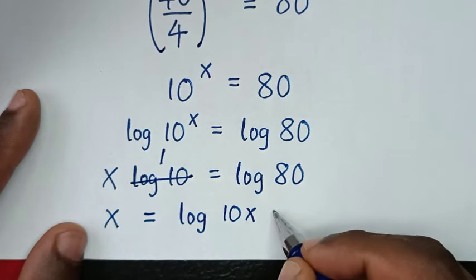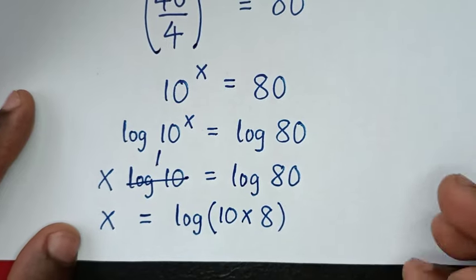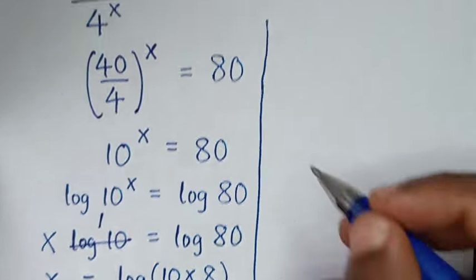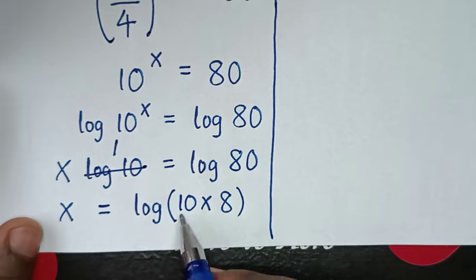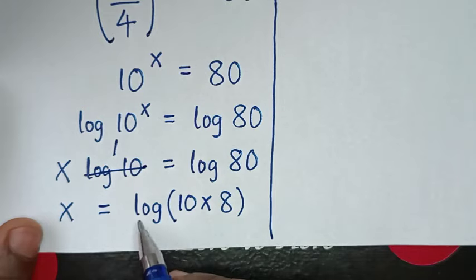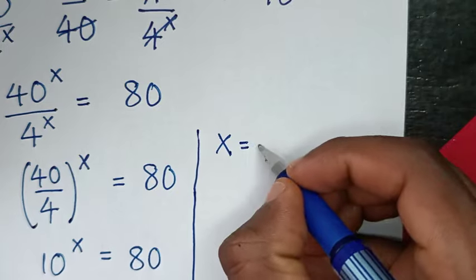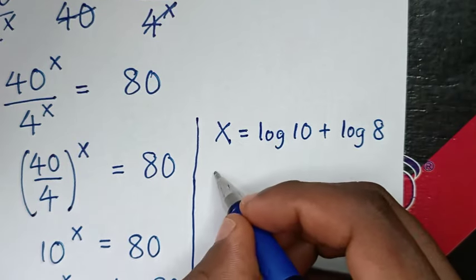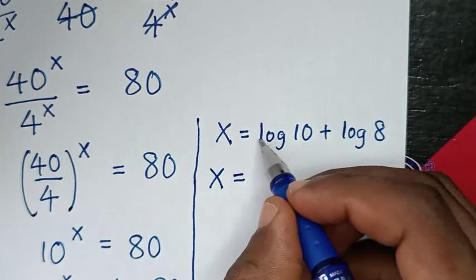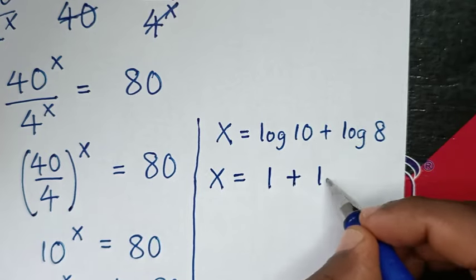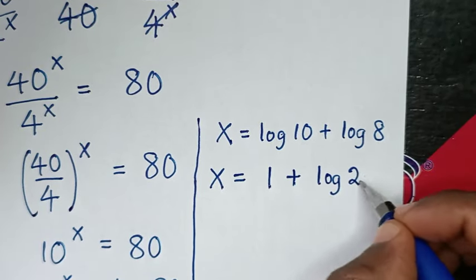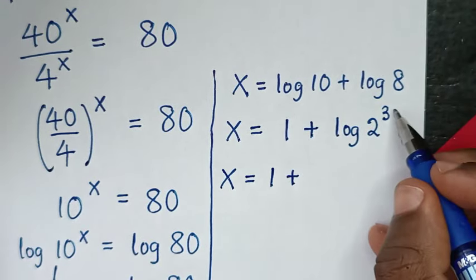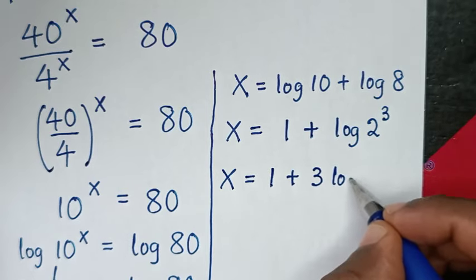80 is the same as 10 times 8. Then in the next step, x is equal to log of 10 times 8, which is the same as log of 10 plus log of 8. So x is equal to log of 10 plus log of 8, and log of 10 is 1. Since 8 is the same as 2 power of 3, the power of 3 moves to the front, giving x is equal to 1 plus 3 times log of 2.